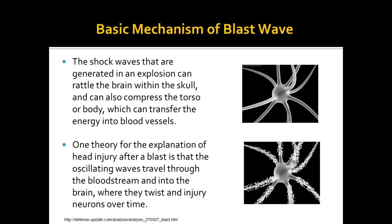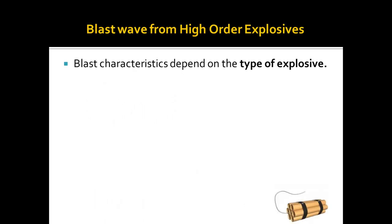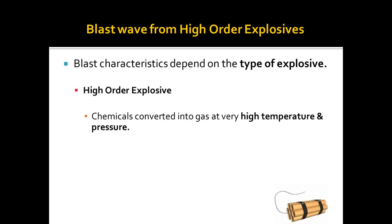This picture depicts a normal neuron and an injured neuron. There are some characteristics that can influence the blast wave. One of the ways by which the blast can be affected is by the type of explosive. There are two major types: high energy explosives and low energy explosives. High order explosives are chemicals converted into a gas at very high temperature and pressure, and the blast wave expands outward in all directions.